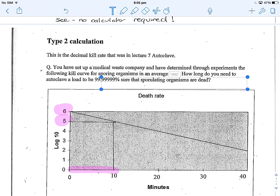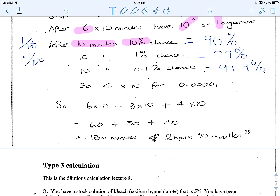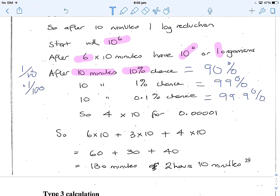So let's have a look. We'll go back here. You can see that we started off, we needed 6 lots of 10 minutes to get down to 10 to the 0 organisms. We needed 3 lots of 10 to get to 99.9. And then to get to 99.9 and then 4 more nines, we need 4 more lots of 10.